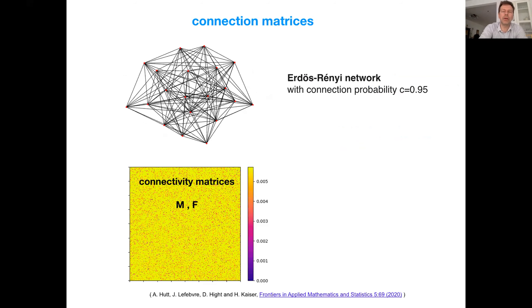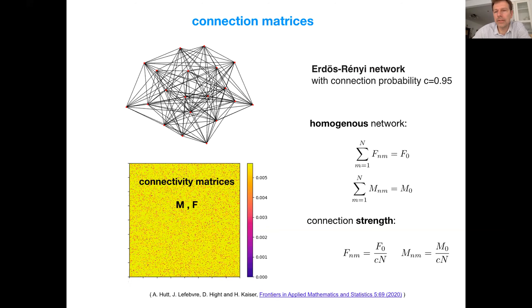We took a network with connectivity probability of 0.95 — a strongly connected network. Other studies show that the results hold down to connectivity probability 0.40; below that it doesn't hold anymore. The analysis assumes a homogeneous network: the mean connectivity computed at each node is constant. When you plot the correlation matrix of the connectivity matrices, it is completely uncorrelated — that's important.